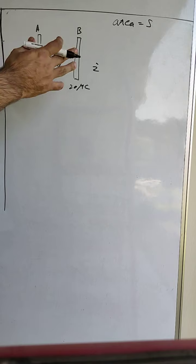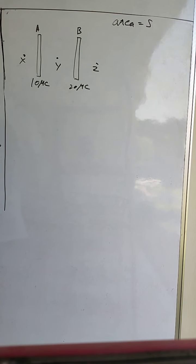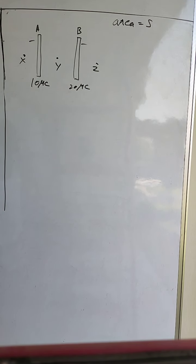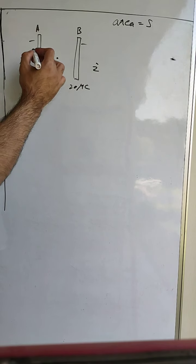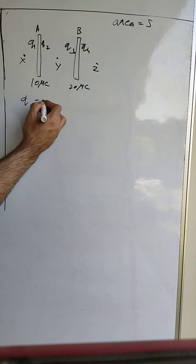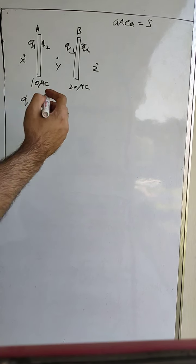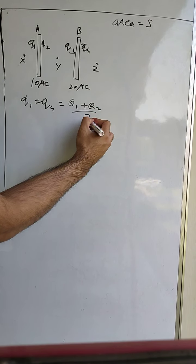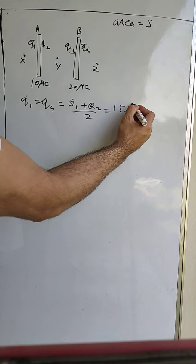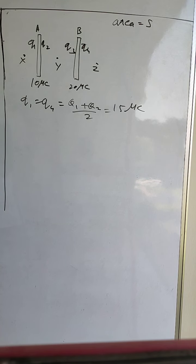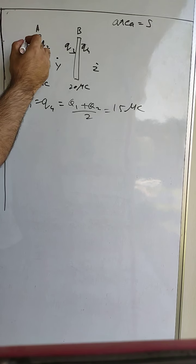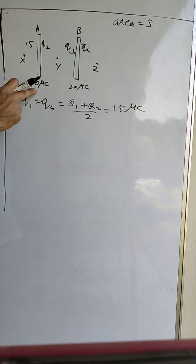To find the surface charges, as derived in the previous video, the outer surfaces of both plates will have equal charges. If the surfaces are labeled q1, q2, q3, and q4, then q1 and q4 will be equal. They will each be equal to 15 microcoulombs, which is the total charge (10 + 20 = 30) divided by 2.